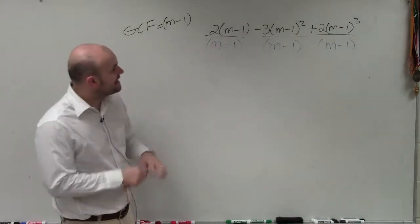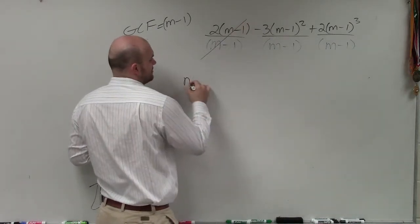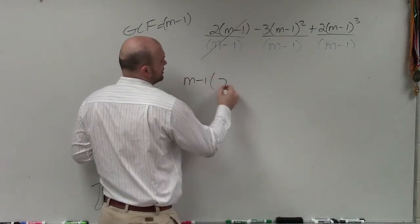So when I divide m minus 1, m minus 1 divided by m minus 1 is just going to leave you with 2.